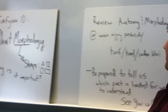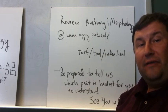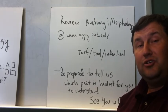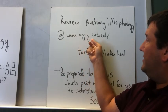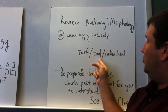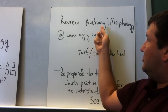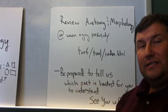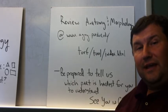Finally, I want you to be prepared to review the anatomy and morphology tab at a website called the turfgrass identification tool. You can either google turfgrass identification tool and locate the turfgrass identification tool at Purdue University, or the website is www.agny.purdue.edu/turf/tool/index.html. And by locating that turfgrass identification tool and looking at anatomy and morphology, I want you to be prepared to tell us which part of turfgrass anatomy is the hardest for you to understand and be able to tell us why. And we'll see you in class on Wednesday. Thanks.